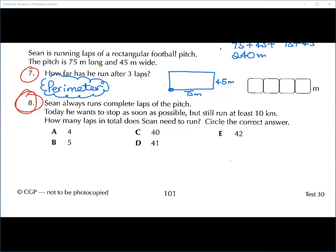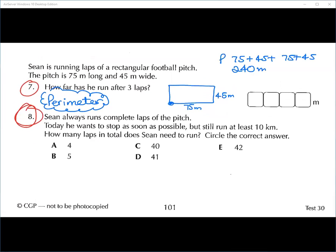That's only one lap. So that's the perimeter of the shape if we go around it once. What do we do with that perimeter if you want to go around it three times? We have to times it by three. So you've got 240 times by three. That gives you 720 metres.